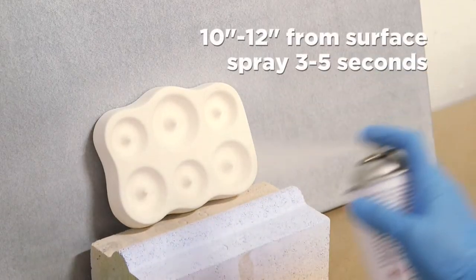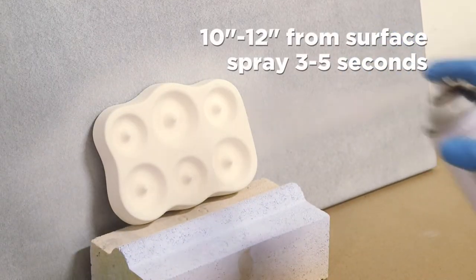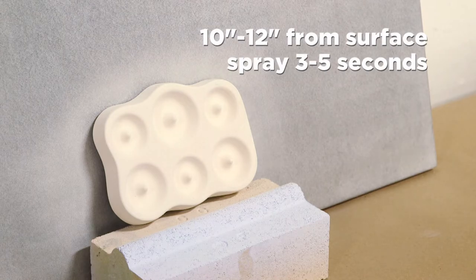The can should be held about 10 to 12 inches from the mold surface and spray coated for three to five seconds.